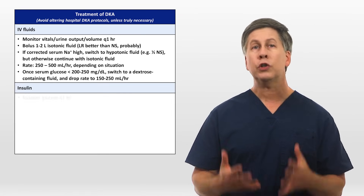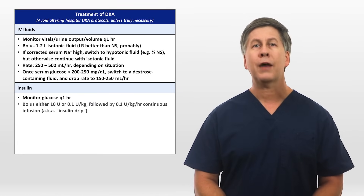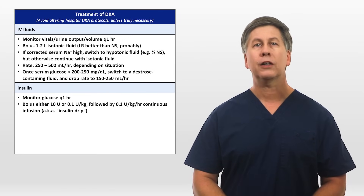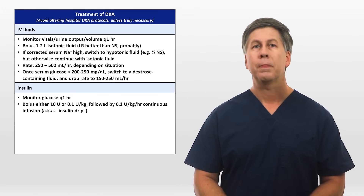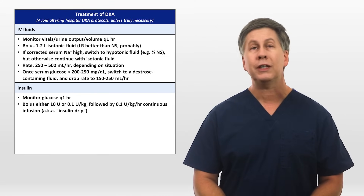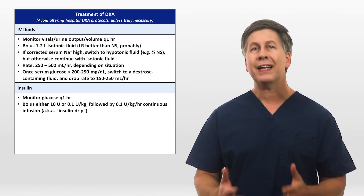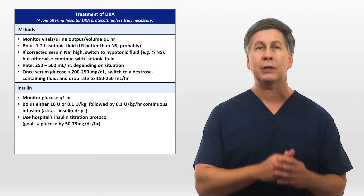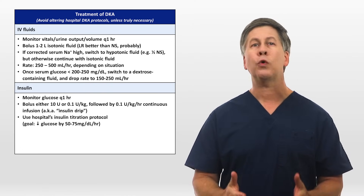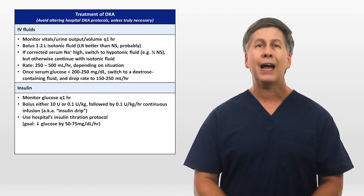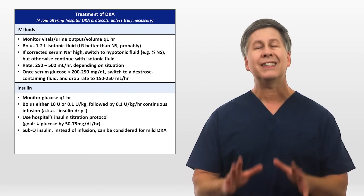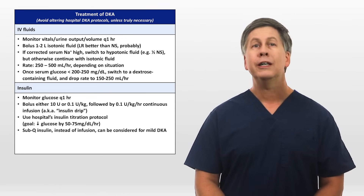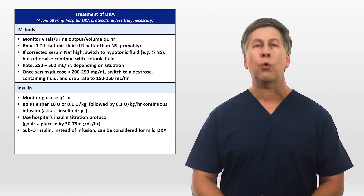Regarding insulin, glucose should also be monitored hourly. The most common approach is to bolus either 10 units of IV insulin or 0.1 units/kg of IV insulin, followed by a continuous infusion at 0.1 units/kg/hr. Insulin infusions are colloquially known as insulin drips. However, the need for the initial insulin bolus has recently been questioned in the literature. Either way, once on the insulin drip, the patient's insulin should be adjusted according to hospital protocol with a goal of decreasing the serum glucose by 50–75 mg/dL each hour. For patients with mild DKA — that is, DKA with only modest volume depletion, modest electrolyte problems, and normal mental status — subcutaneous insulin right from the start can be considered instead of an insulin drip. The main advantage of this approach is that it allows patients to be placed in lower levels of care within the hospital, sparing ICU beds, a practice that anecdotally became more common during the COVID pandemic.